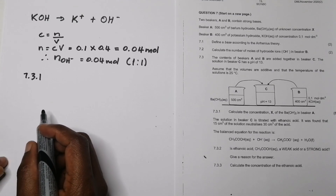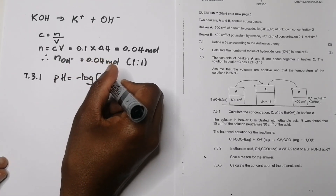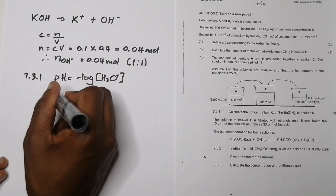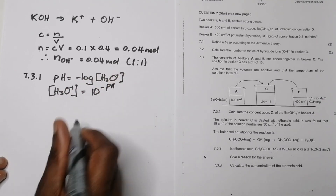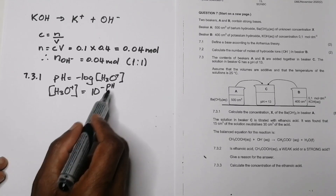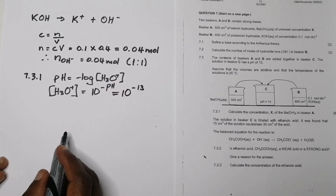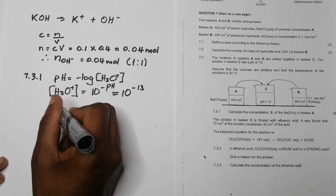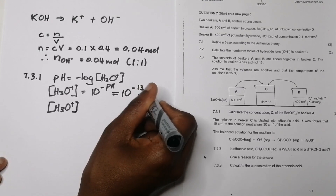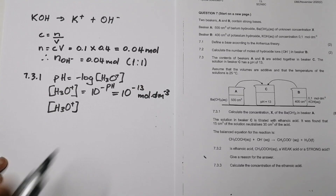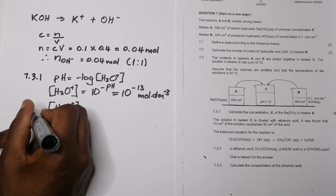We know pH = −log[H₃O⁺], so the concentration of hydronium ions is 10^(−pH) = 10^(−13) mol·dm⁻³. Now I need the concentration of hydroxide ions, not hydronium ions. Using the water ionization constant Kw = [H₃O⁺][OH⁻] = 10^(−14) at 25°C.